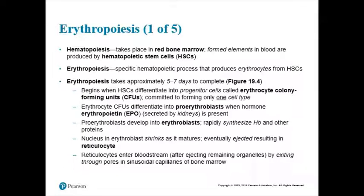Once it's an erythrocyte colony-forming unit, it matures — gets older and bigger — into what we call a pro-erythroblast. But in order for this to occur, the cell needs to be told to do so, using a hormone. The hormone that helps with erythropoiesis is called erythropoietin, sometimes abbreviated EPO. Erythropoietin is the hormone that stimulates erythropoiesis by helping to mature erythrocyte colony-forming units into pro-erythroblasts.